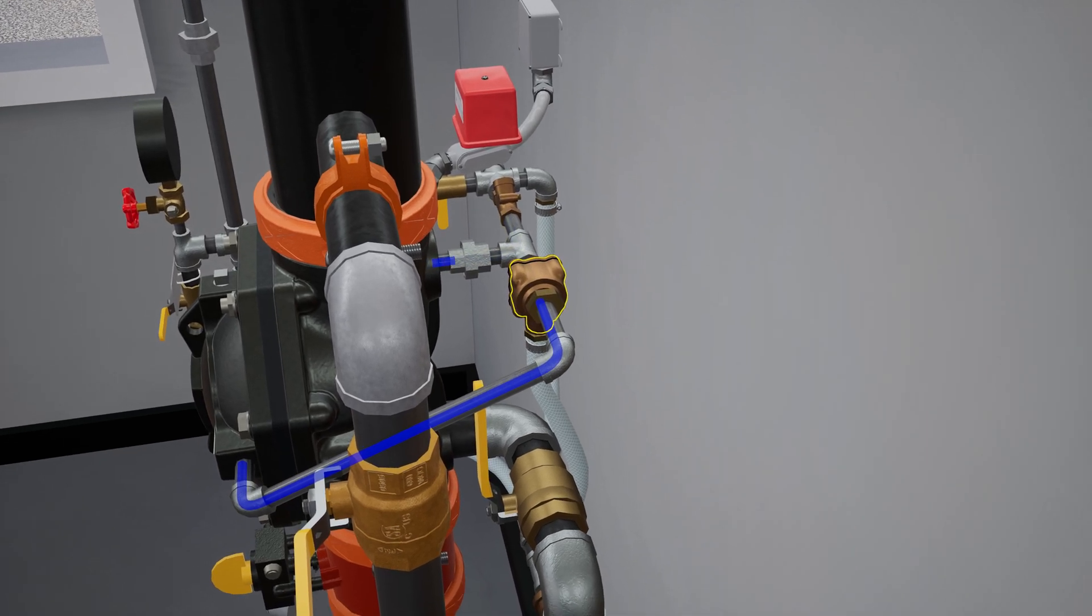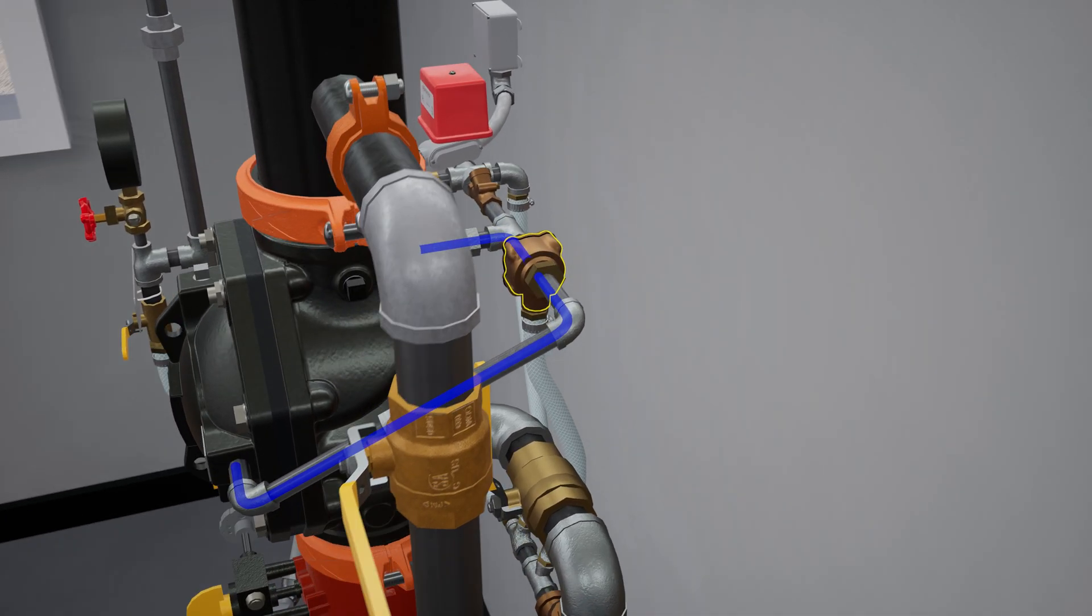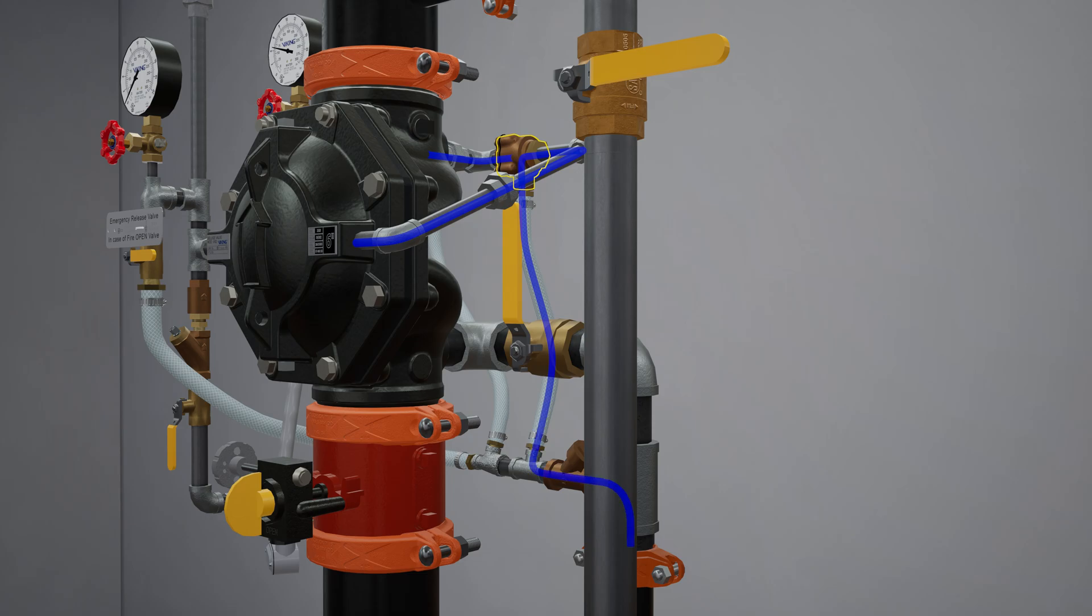The PORV is activated when water from the main supply forces the push rod open, redirecting prime water out into the drain.